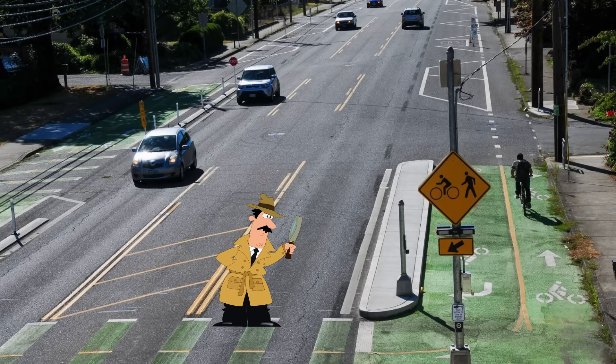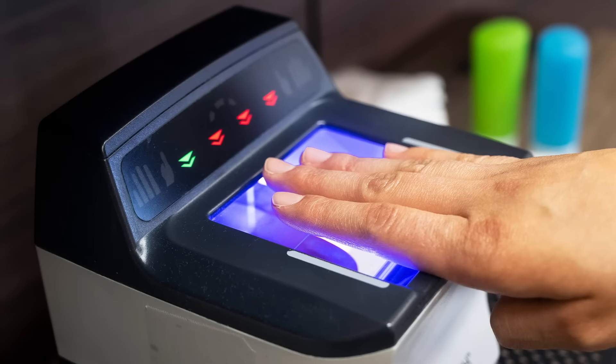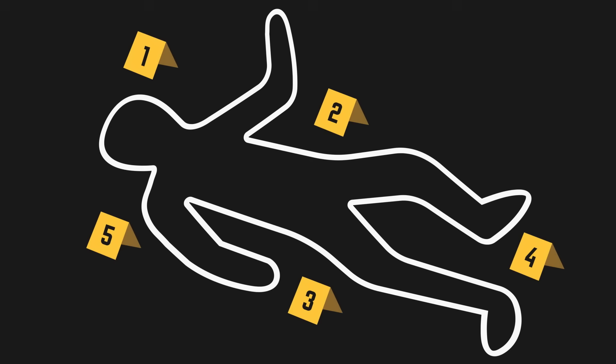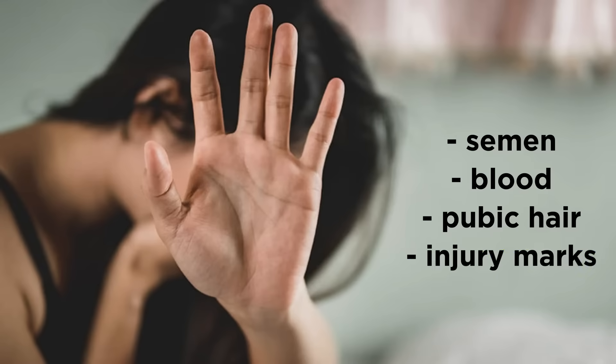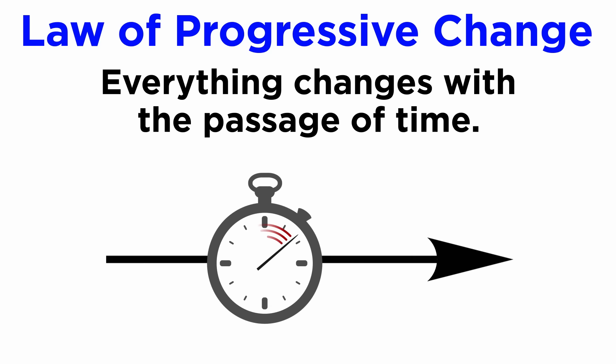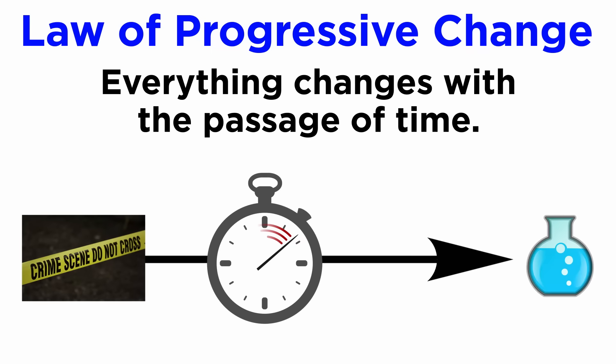Not only evidence on the crime scene, but human beings involved in the crime also undergo changes, other than permanent features such as fingerprints. The more time it takes to discover a corpse, the more difficult it becomes to answer questions such as the identity of the person, cause of death, and time since death. In cases such as sexual assault, incriminating evidence present on the victim and the accused—such as semen and bloodstains, pubic hair, and injury marks—might get destroyed or displaced. Therefore, this principle has a tremendous impact on CSI, directly affecting each and every step of investigation, from securing the crime scene to analyzing evidence in the laboratory.